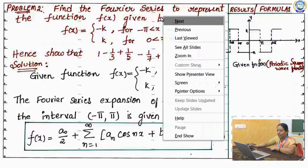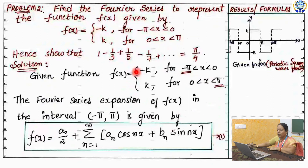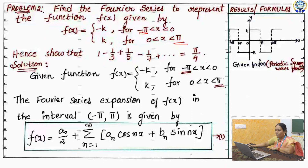f of x equals to minus k for minus pi less than x less than 0, and k for 0 less than x less than pi. Your interval is minus pi to plus pi. From minus pi to 0 and at 0 to pi — what is your discontinuous point? At x equal to 0 is the point of discontinuity.